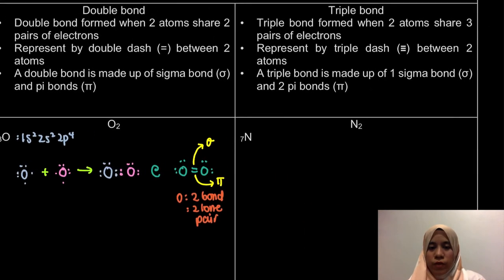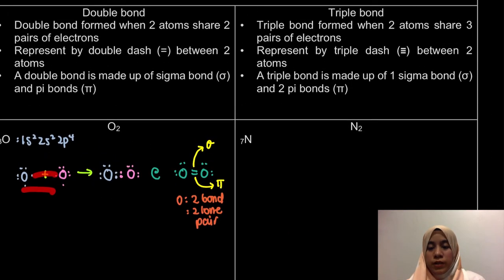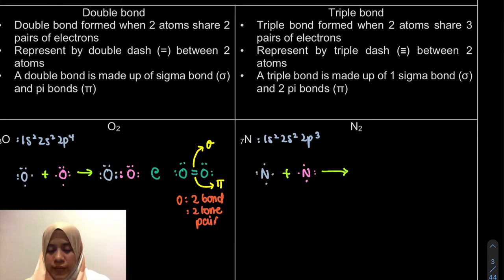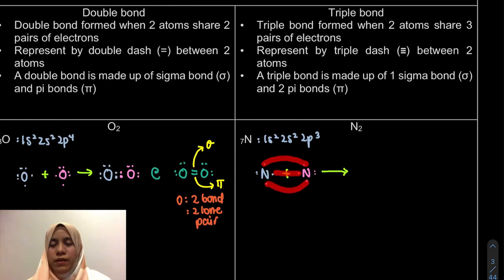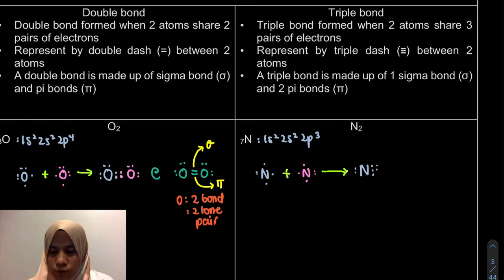Last but not least, for the case of a triple bond in a covalent bond — a triple bond is when two atoms share three pairs of electrons. For nitrogen, it will share three pairs of electrons. Drawing the nitrogen molecule, each nitrogen shares three pairs, achieving octet — 1, 2, 3, 4, 5, 6, 7, 8. That's the octet. The same goes for the second nitrogen.